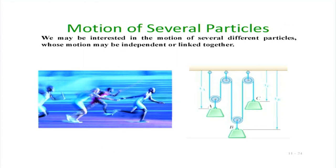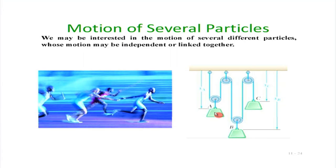Now let us look at motion of several particles. In a relay race the baton is passed from one runner to another — there are many objects which in physics can be idealized as particles. We can define relative velocities of one with respect to another. The motion of particles may be independent as in this case, or it may be linked together. For example, if particles A, B, C are linked by a pulley mechanism, then the velocities or speeds of all these particles are intricately linked to each other.